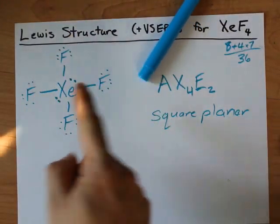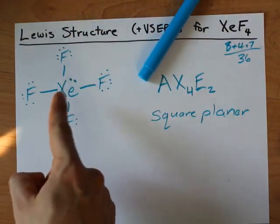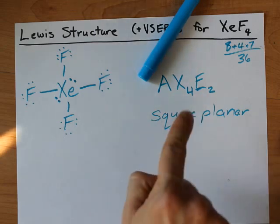But that's it. The Lewis structure of XeF4 has two lone pairs on the central atom, and it's a square planar molecule.